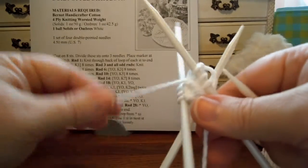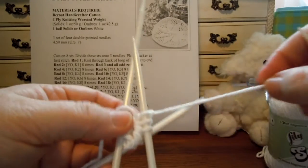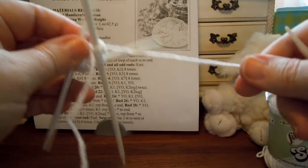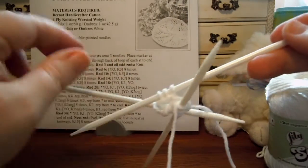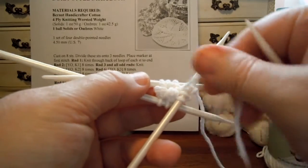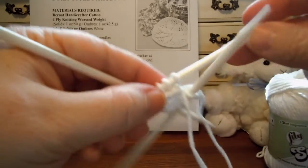So now we're ready for round two. Round two says yarn over, knit one, eight times. So we're going to do yarn over, knit one, yarn over, knit one, over and over and over again. And the way we're going to know it's eight times is because there's eight stitches going round and round here.